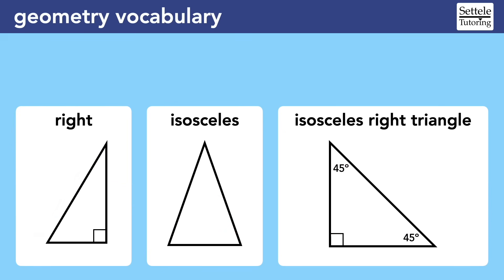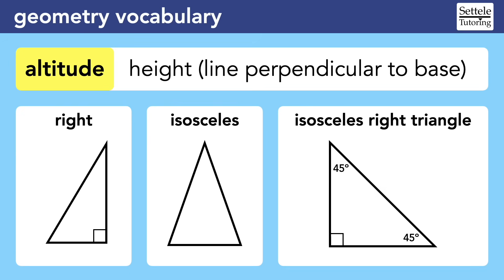No matter what kind of triangle you have, you might need to draw an altitude, especially if you're trying to find the area of the triangle. An altitude is more commonly called the height of the triangle. For right triangles, we can use one of the legs as the height and altitude in most cases. But to find the area of an isosceles triangle, we would need to draw an altitude that is perpendicular to the base. Notice that the altitude does not need to go up and down — it just needs to be perpendicular to one of the sides.